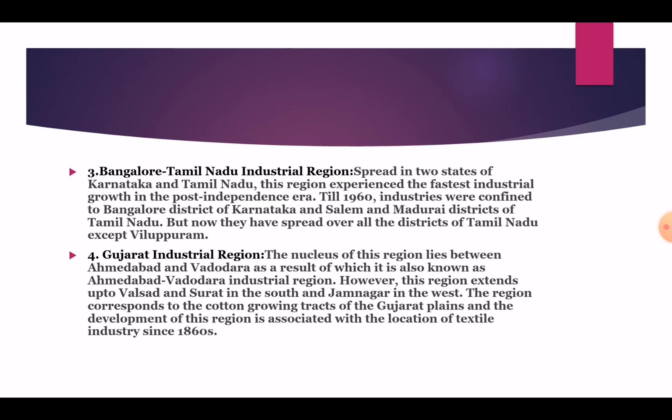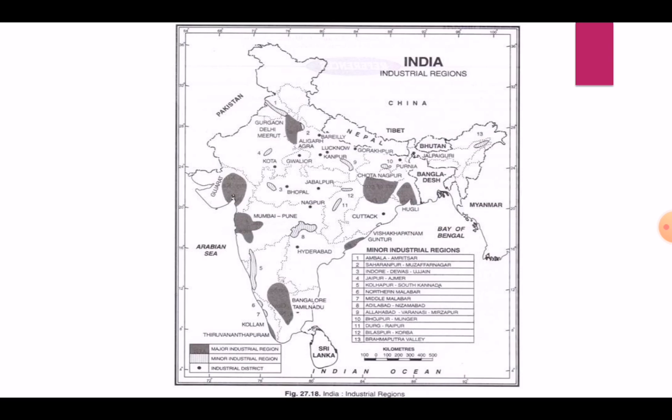Gujarat Industrial Region: The nucleus of this region lies between Ahmedabad and Vadodara, as a result of which it is also known as the Ahmedabad-Vadodara Industrial Region. However, this region extends up to Valsad and Surat in the south and Jamnagar in the west. The region corresponds to the cotton growing tracts of the Gujarat Plains and the development of this region is associated with the textile industry since the 1860s. Here is a map of the major industrial regions of India.